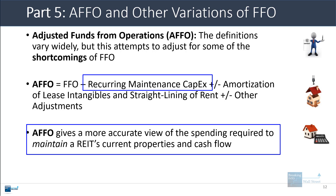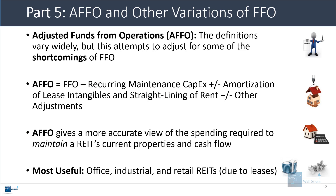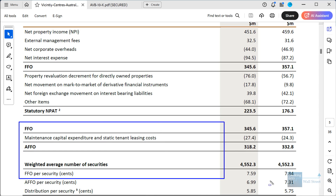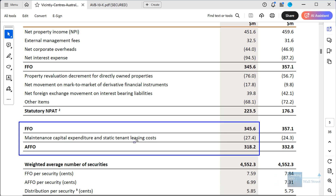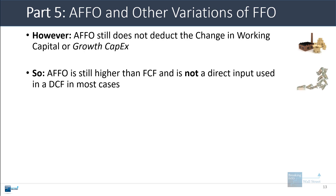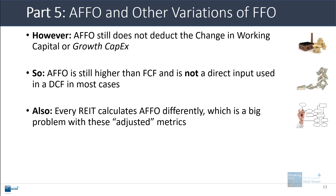AFFO tends to be most useful for office, industrial, and retail REITs because there are multi-year leases that create sometimes very large adjustments for straight-lining of rent. Looking at the Vicinity Centres Australian example, they calculate AFFO by taking FFO and deducting maintenance capex and static tenant leasing costs — essentially reflecting what they're really generating from existing properties after long-term maintenance costs. AFFO still does not deduct the change in working capital or growth capex on new developments or acquisitions, so it's still higher than free cash flow and still not a direct DCF input.